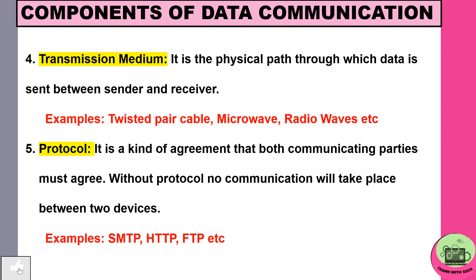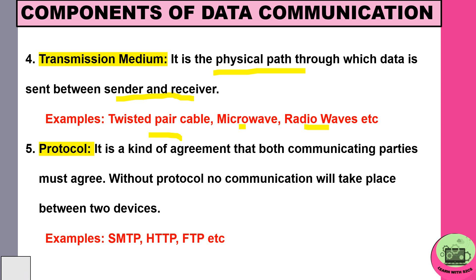For the transmission medium, it is the physical path through which the data is sent between sender and receiver. Examples include twisted pair cable, microwave, and radio waves.